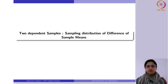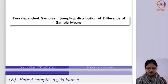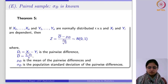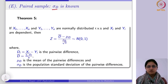So we want to see how the sampling distribution would vary. So far we have focused on independent samples; now we will focus on dependent samples. The first result in this criteria is when the standard deviation sigma_d, which is the population standard deviation, is known to us.